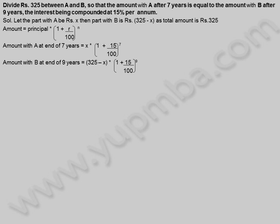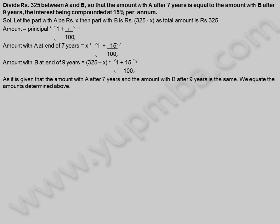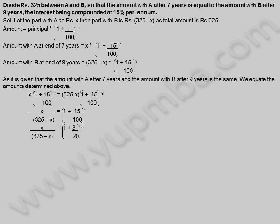Amount with B at end of 9 years is equal to 325 minus X into 1 plus 15 by 100 whole power 9. As it is given that the amount with A after 7 years and the amount with B after 9 years is the same, we equate the amounts. X into 1 plus 15 by 100 whole power 7 equals 325 minus X into 1 plus 15 by 100 whole power 9. X by 325 minus X equals 23 by 20 into 23 by 20.